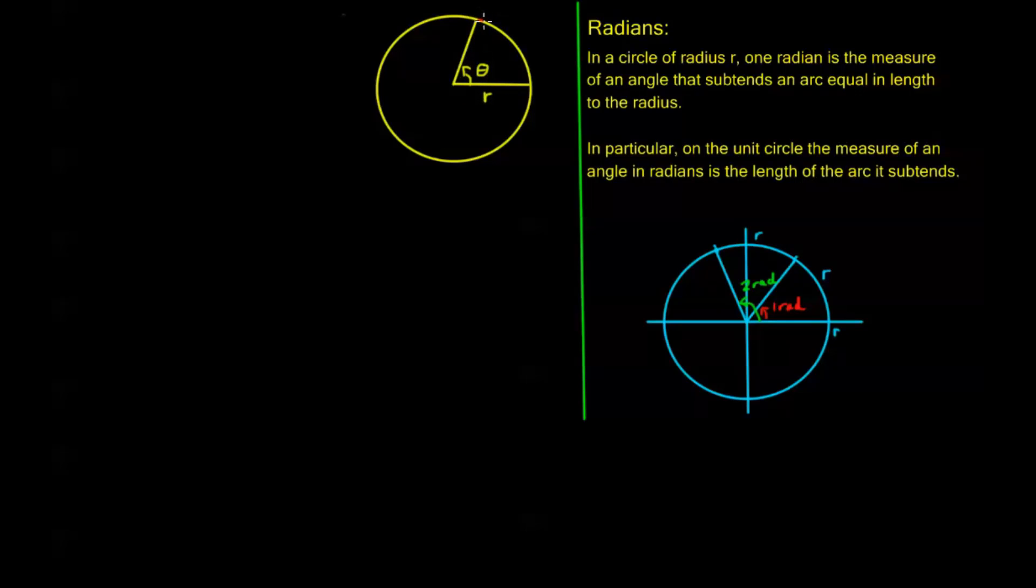I'm going to go ahead and highlight what I'm talking about right here in red. See this? This red part, and I'm going to call this s. An arc of a circle is a portion of a circle, and in this context, we're going to be talking about the portion of the circle, or the arc that's subtended by some interior angle theta.